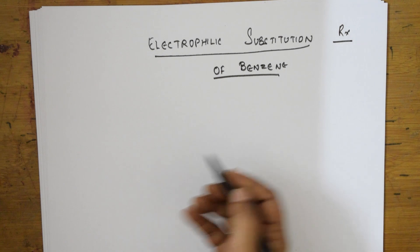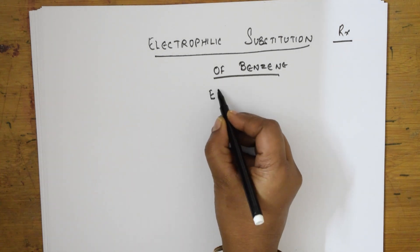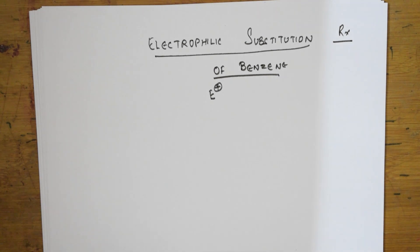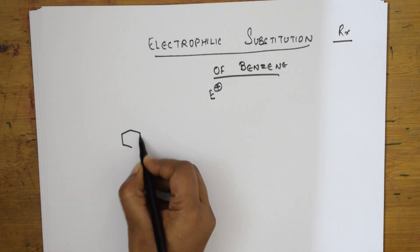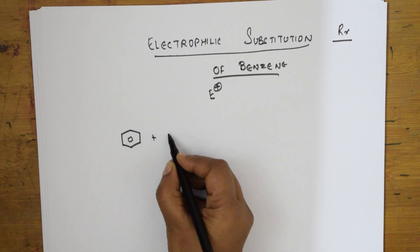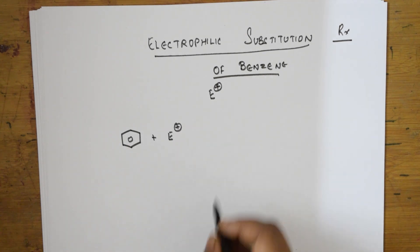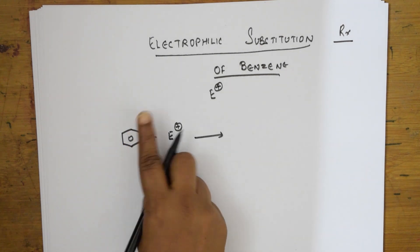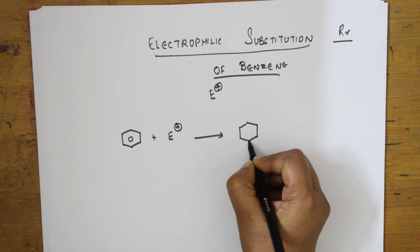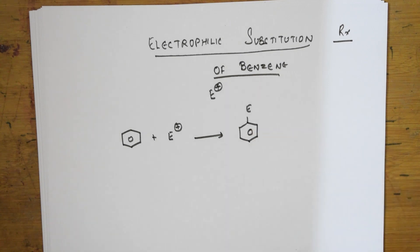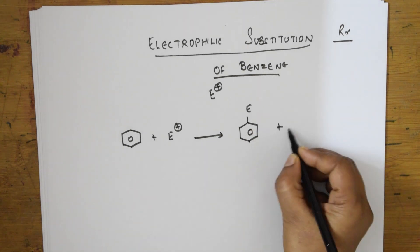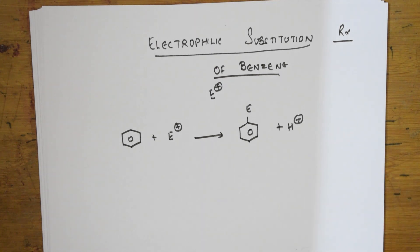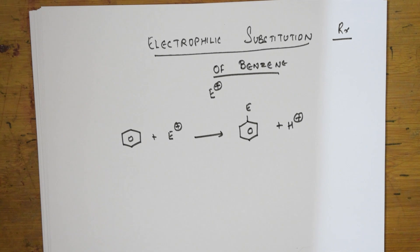First of all, the electrophile — what do we denote it with? We denote the electrophile with E plus. When I take a benzene molecule and add an electrophile, an electron-deficient species, the bond is broken and the electrophile adds, then H plus is lost. This is the essence of electrophilic substitution reactions. I will be showing the mechanism step by step.